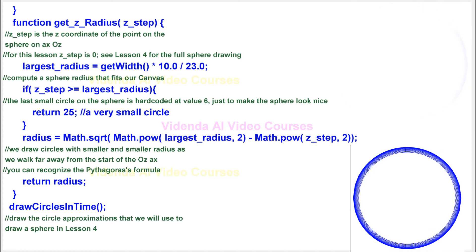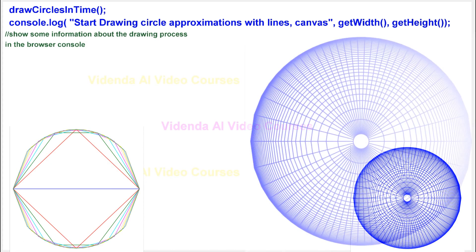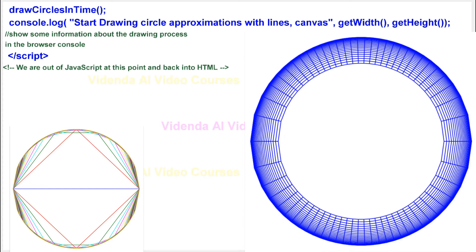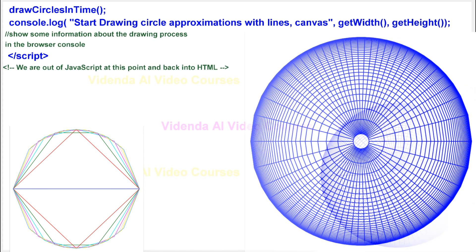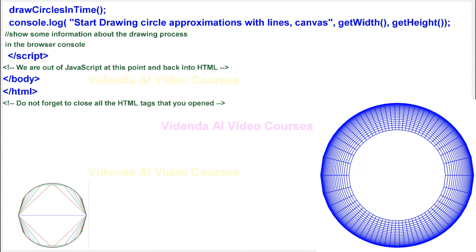Draw the circle approximations that we will use to draw a sphere in lesson 4. Show some information about the drawing process in the browser console. We are out of JavaScript at this point and back into HTML. Do not forget to close all the HTML tags that you opened.